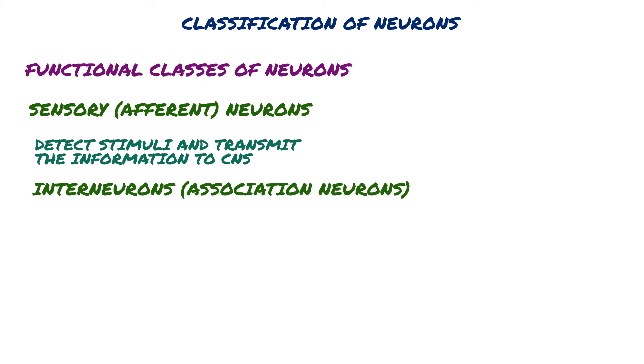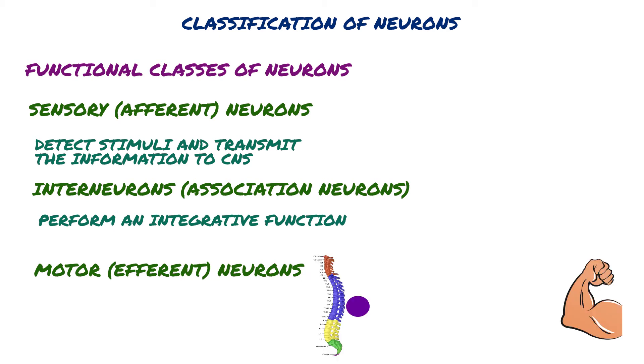Interneurons (association neurons) lie entirely in the CNS. They receive signals from many neurons and perform integrative functions to respond to different stimuli, such as decision-making. Motor (efferent) neurons transmit the appropriate response from interneurons to end organs such as muscle and gland cells to carry out the body's response to stimuli.